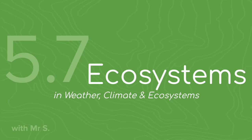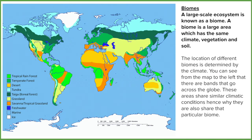We're covering what an ecosystem is and the different constituent elements. Ecosystems are a community of biological life interacting with the physical environment, but we also use the word biomes — a biome is a large-scale ecosystem which spans the globe. You can see on my map that bands of color represent different ecosystems around the world. The location for these is largely down to climatic factors.